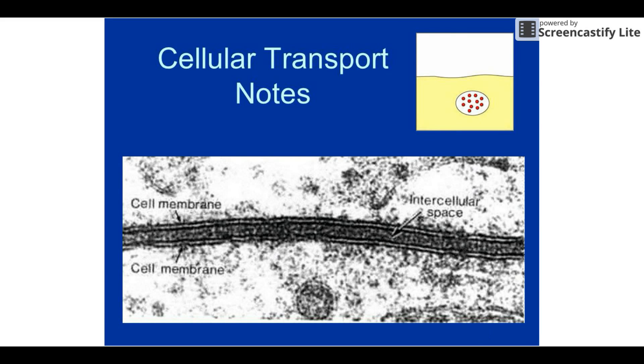All right, gang. So this is our unit that deals with really how things get in and out of cells. It's a little bit of cell physiology is really what we're talking about. We're focusing on how cells work. And as you can see here, what we're going to be talking about is cellular transport. Really what it's all about is how we get things in and out of cells.